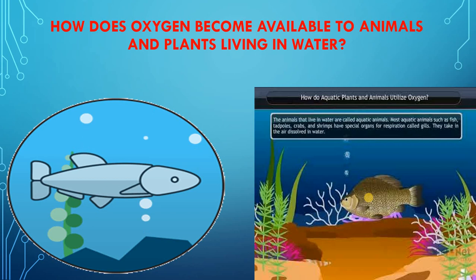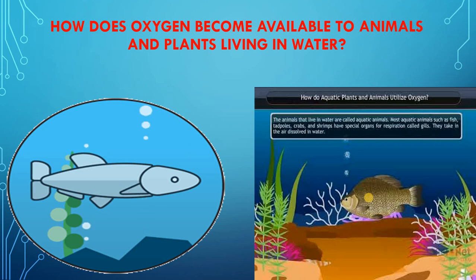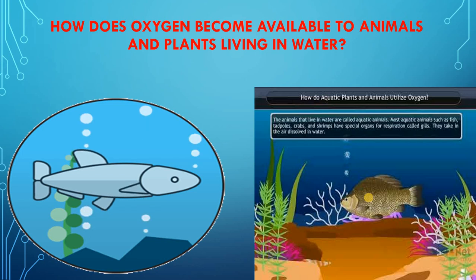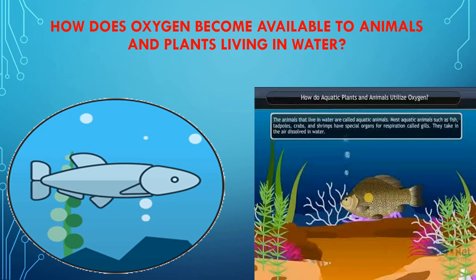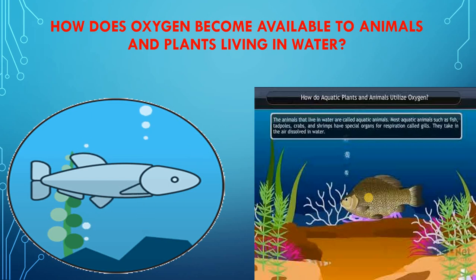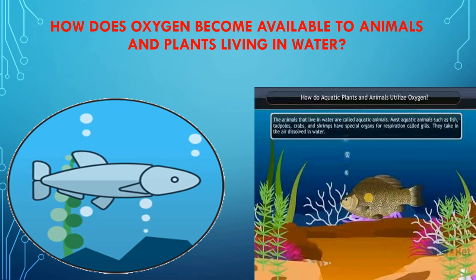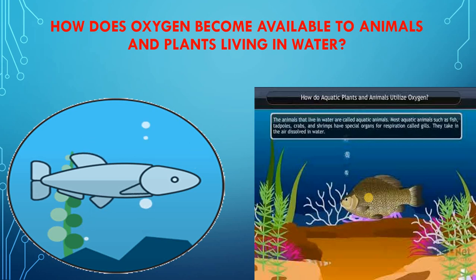Since air contains oxygen, we can say that animals and plants which live in water use the oxygen dissolved in water for breathing. Water has some dissolved oxygen in it. Water animals like fish, which live in water, breathe in oxygen dissolved in water of pond, lake, river or sea. The plants that live in water also use the oxygen which is dissolved in water. Oxygen is present in water as well. If there were no oxygen in water, then no living things would survive in water.